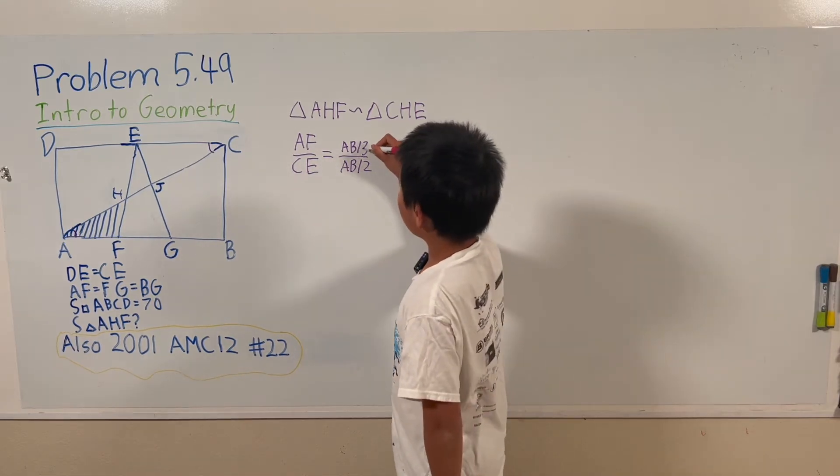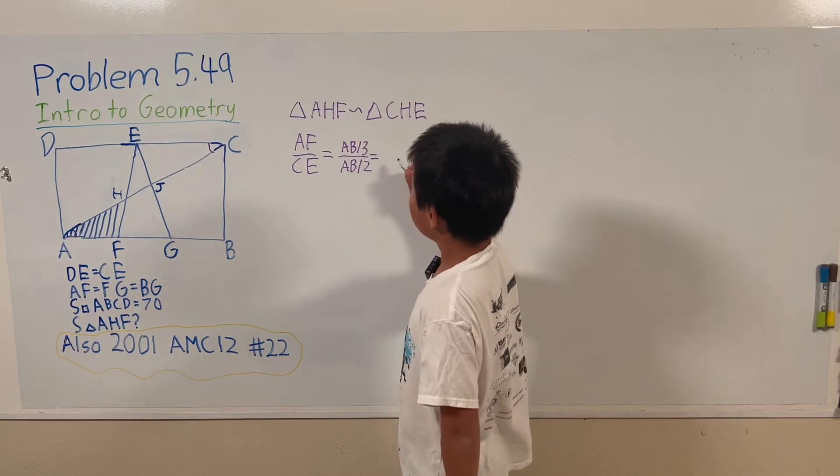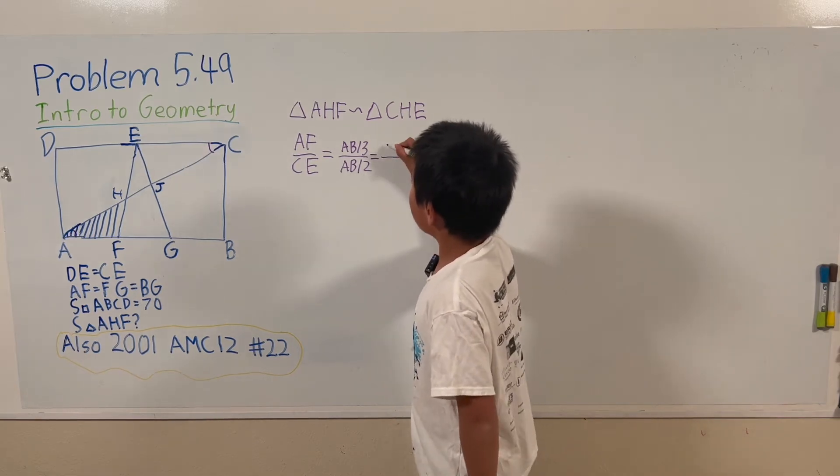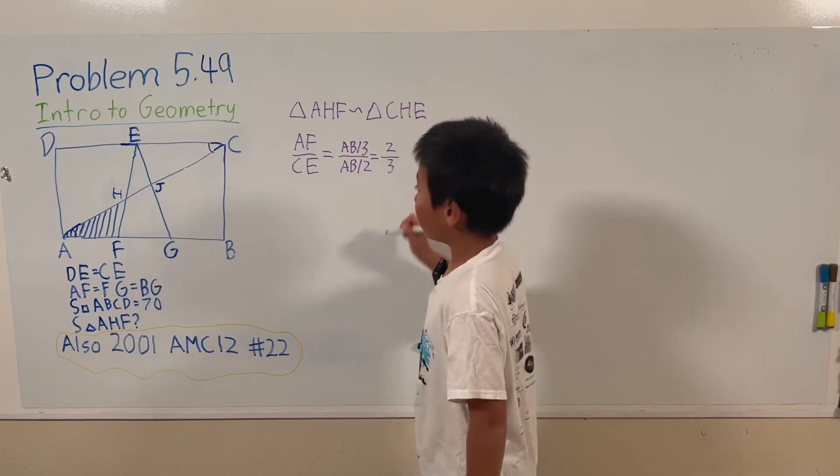Now we can cancel out these ABs and then we can get that this is 2 over 3.